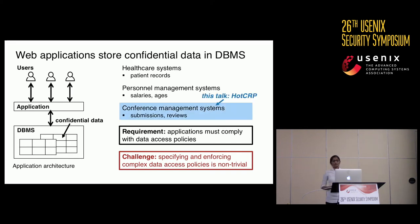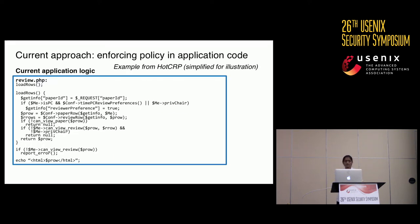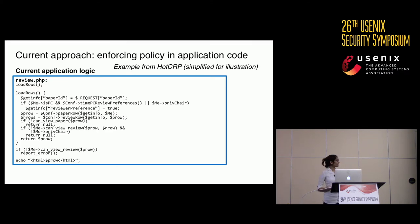Let me show you an example from HotCrp, a popular conference management system, showing how policy checks are currently implemented in the application and why ensuring correct enforcement is non-trivial. I'll use the conference management system as a running example. Today, developers try to enforce these policies within the application code. Here we have a snippet of PHP code from HotCrp which loads the reviews of a paper on behalf of a user.